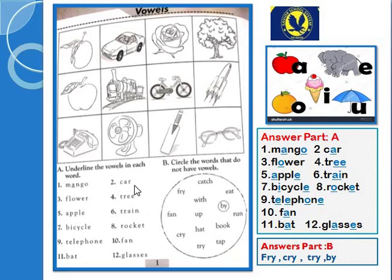Isi tarah next mein car hai — aapne A ko underline karna hai. Flower hai: O, N, E — dono ko aapne underline karna hai. 4 hai tree — isme double E ko aapne underline karna hai. Next, apple — underline A and E. Number 6, train — A and I. Number 7, bicycle — I and E.